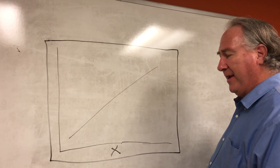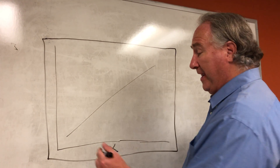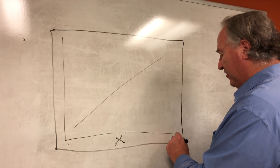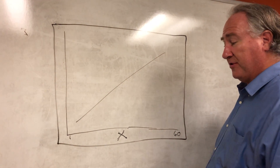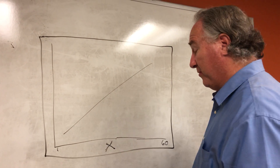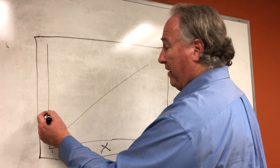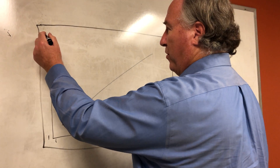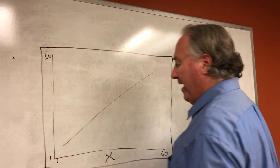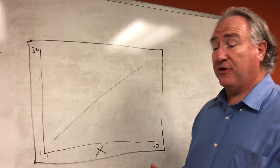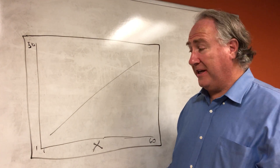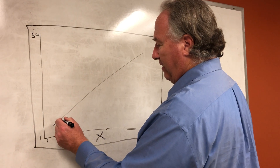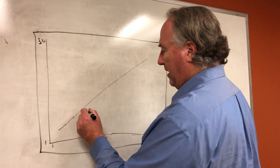We have one predictor variable X, and let's say it has a range of 1 to 60 in terms of persons' values on this predictor variable. Then we have some outcome variable with a score range of 1 to 50.